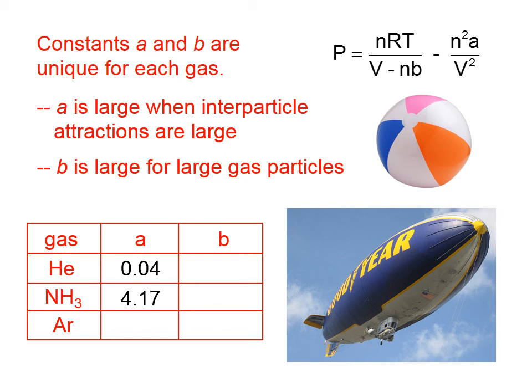What about for argon? Argon atoms are attracted to each other, again, by London dispersion forces, which aren't very strong, but they're much stronger than the London dispersion forces for helium, but well weaker than the hydrogen bonding forces between ammonia molecules. So this trend seems to match what our statement here is, a is large when interparticle attractions are large. What about the values of b? b is large for large gas particles. So, again, helium is not very large. The value for b is fairly small. Ammonia is a much bigger molecule, so it has a larger value of b. Argon, while its mass is about 40 AMUs, right, an argon atom has a mass of about 40 AMUs,